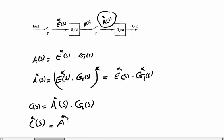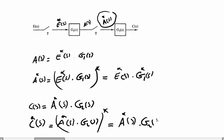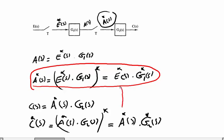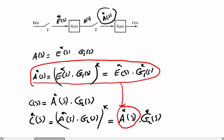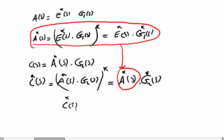A*(s) times G2(s), all being sampled — but if it's already sampled there's no need to sample again, and G2(s) is sampled. Now we substitute this equation into the expression, and we get C*(s) equal to E*(s) times G1*(s) times G2*(s).